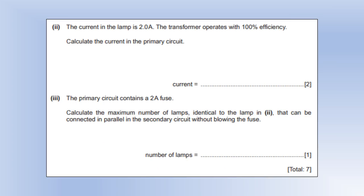So the current in the lamp is 2 and the transformer is 100% efficient, so 100% efficient means power in is equal to power out. So power out is calculated by doing the output current and the output voltage, so that's 12 watts. And the input must be equal to that, that's what 100% efficiency means. We know the input voltage, so that gives us the input current.